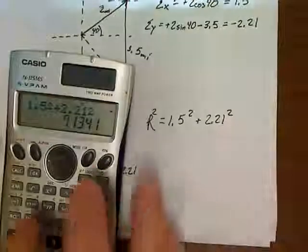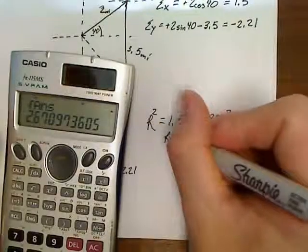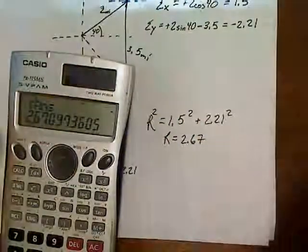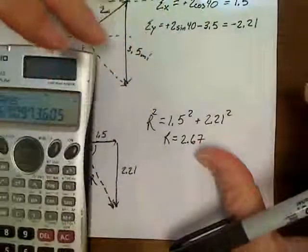So we'll plug this in our calculator. 1.5 squared plus 2.21 squared equals 7.1, but that would be for R squared. So, we still need to take a square root of that answer. So, R, the resultant of these two vectors, is 2.67.